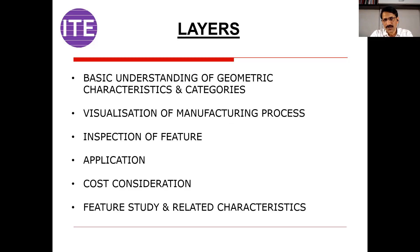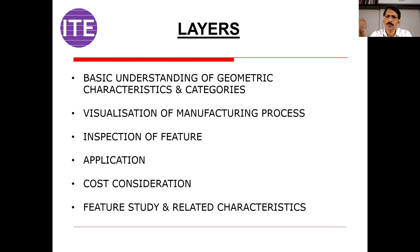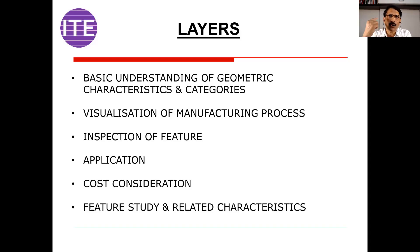GD&T has many layers or levels to achieve. The first and most basic level is understanding of geometric characteristics and categories — for example, being able to draw the symbol of position tolerance. The second level is visualization of the manufacturing process. As a good design engineer, when you provide a characteristic like runout on a drawing, you must simultaneously be able to visualize how you are going to produce that part and which manufacturing process you will use to achieve that tolerance value.